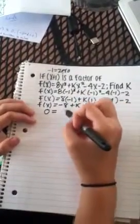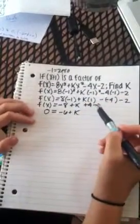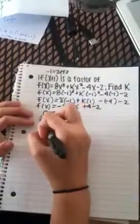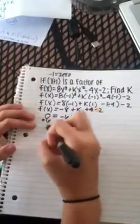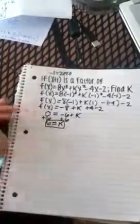So it's going to be 0 = -6 + k when you add -8 + 4 + (-2). Now we're going to add 6 to both sides and it's going to be 6 = k. So that's the solution.